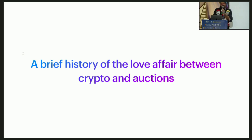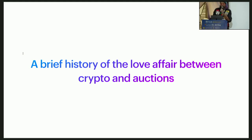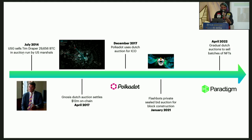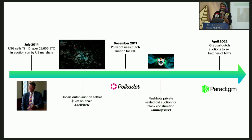Crypto has had a very long-standing tradition of being intertwined with auctions, whether they're off-chain or on-chain. The very brief history of famous auctions in crypto: the Silk Road Bitcoin auction was maybe one of the first big ones. Gnosis had on-chain Dutch auctions. Polkadot's ICO had a Dutch auction used by hundreds of thousands of people. Flashbots launched in January 2021 for the first bundle. And NFT auctions have had a bunch of incentive changes in design since then.